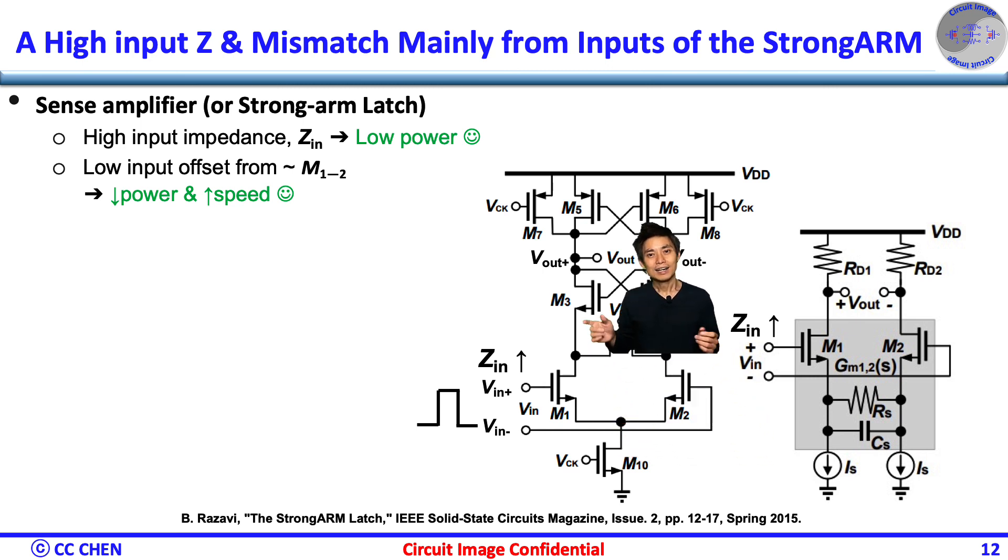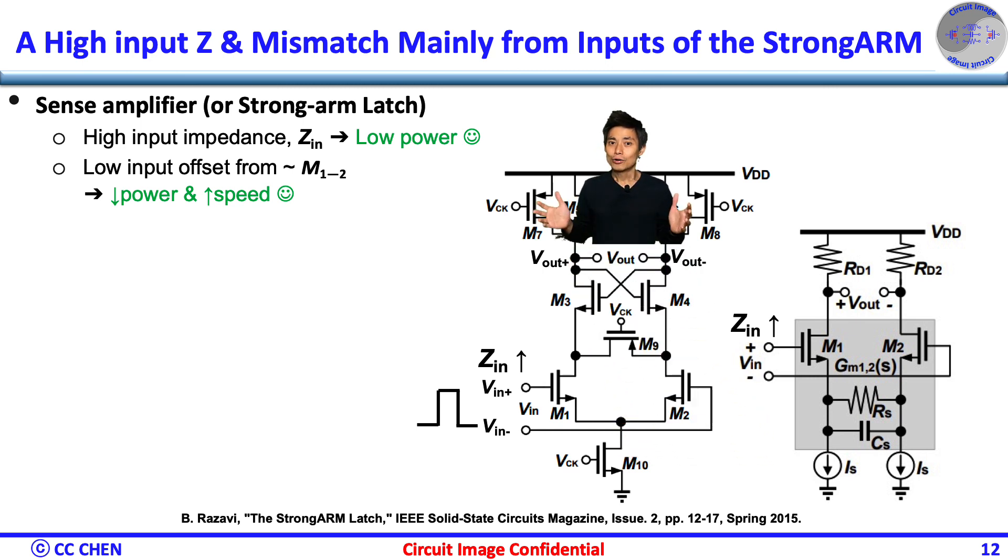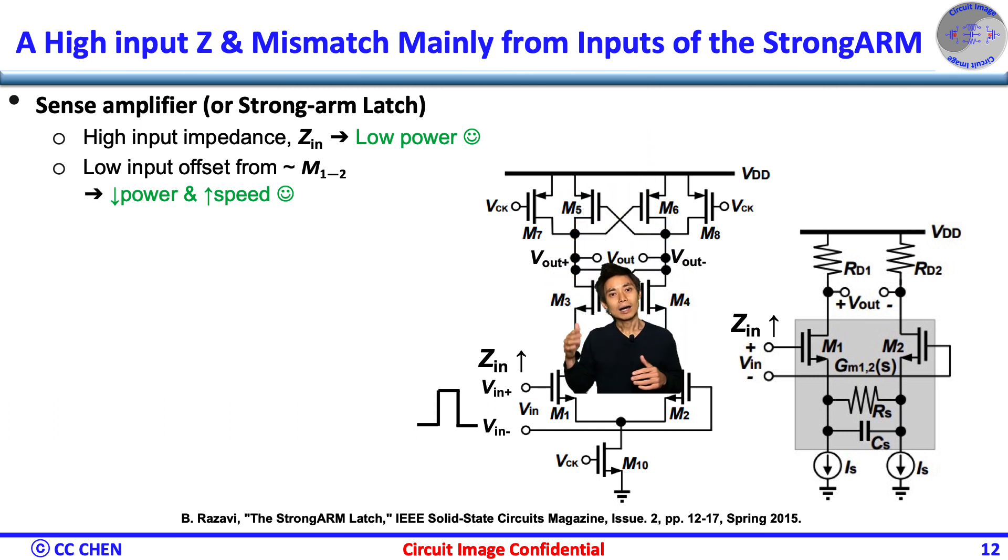Again, the reset device don't affect the input random mismatch, and the high gain of the latch will contribute to a very low input referred offset. Therefore, it will help another elegant way of performing the DC offset cancellation at the input stage of the strong-arm latch such that the speed can be increased while keeping the power low enough.